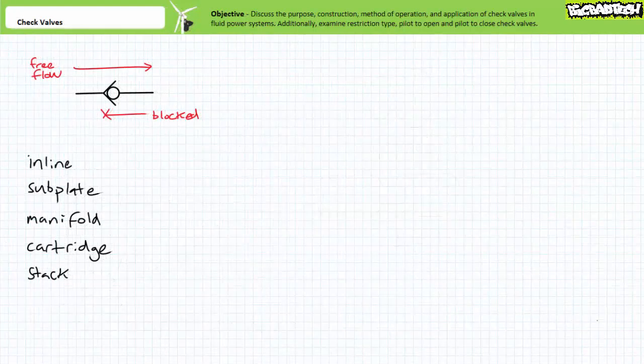Additionally, valves can be categorized by their mounting method. Valves can be inline, subplate, manifold, cartridge, or stack mounted.